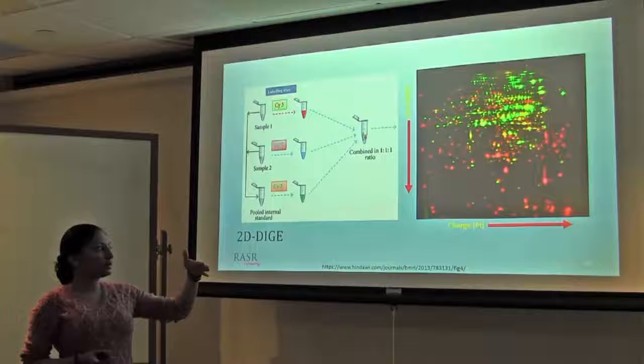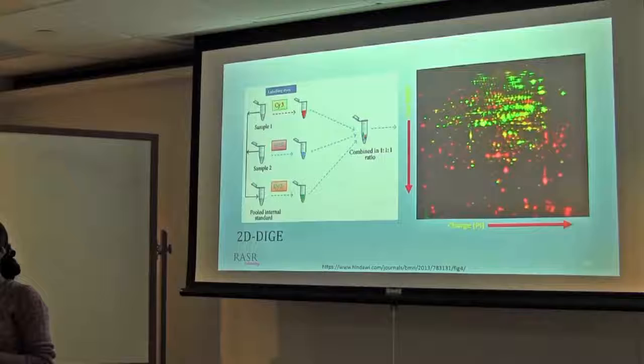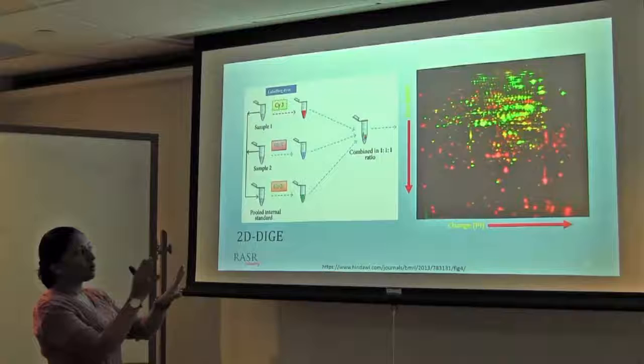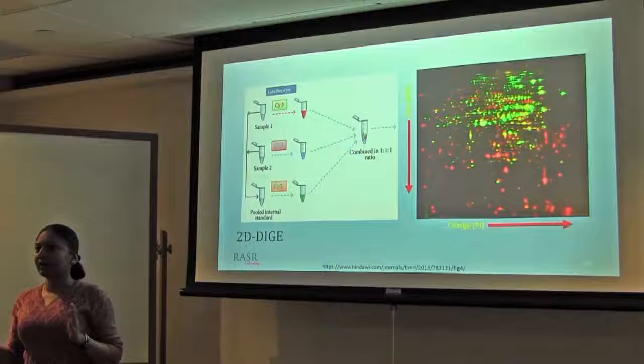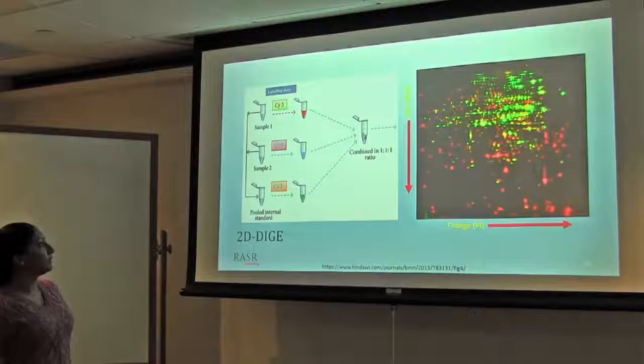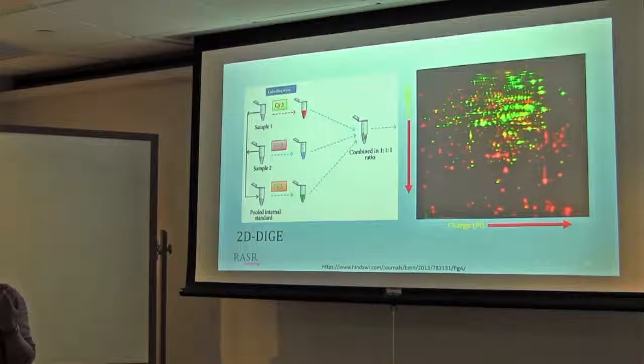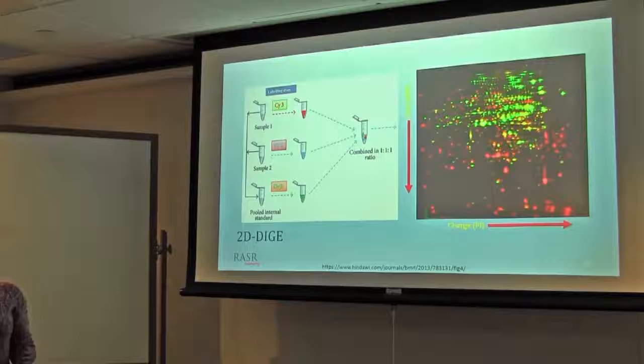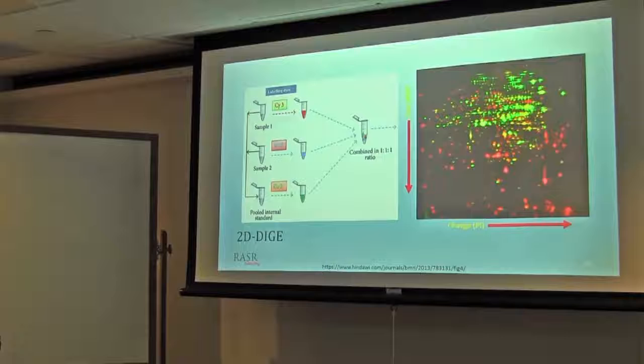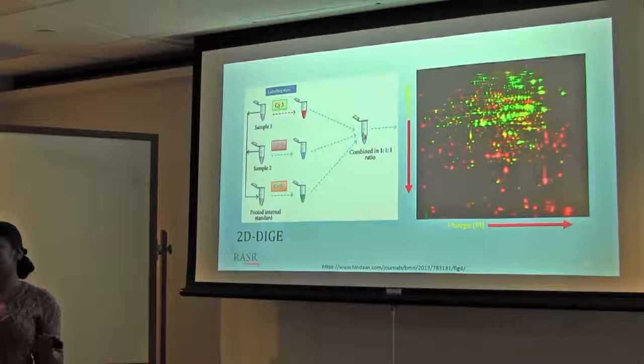You separate them in the same way: first dimension according to charge, second dimension according to their size. Now you can record the image at different wavelengths. Then you can overlay all three wavelengths to see differential expression. If you label one sample with red and the other sample with green color, then the red spots are showing all the proteins which are overexpressed in sample 1. Green spots are showing the proteins which are overexpressed in sample 2. If there is a yellowish color, these are equally present in both samples. These are non-changeable proteins or they remain the same.